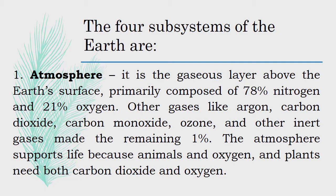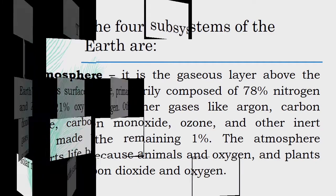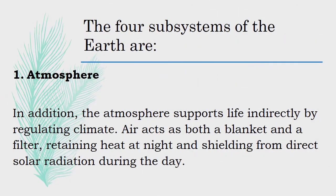carbon dioxide, carbon monoxide, ozone, and other inert gases make up the remaining 1%. The atmosphere supports life because animals need oxygen and plants need both carbon dioxide and oxygen. In addition, the atmosphere supports life indirectly by regulating climate. Air acts as both a blanket and a filter, retaining heat at night and shielding from direct solar radiation during the day.